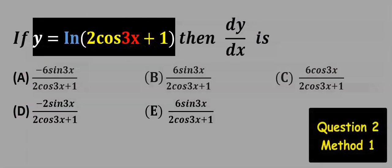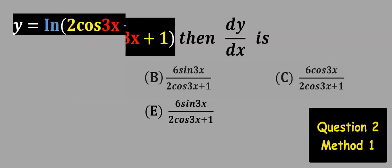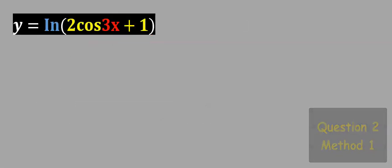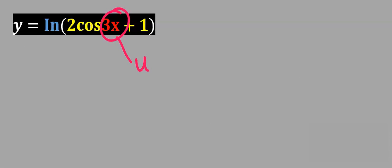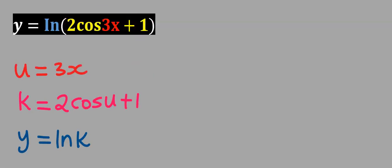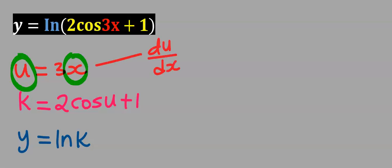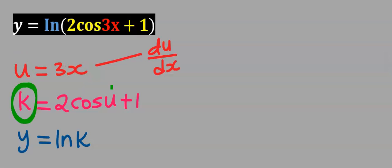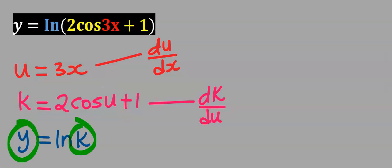Next let's consider this question. Let's identify the first inner function which is u, and everything here becomes k. This is u and this is x, hence we have du/dx. This is k and this is u, so we have dk/du. This is y and this is k, and you have dy/dk.